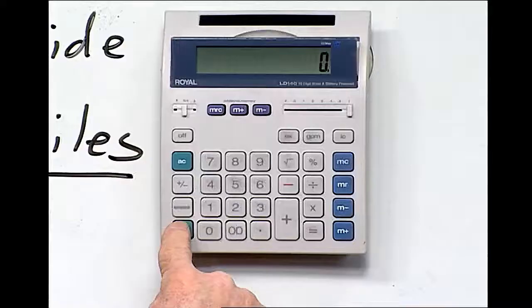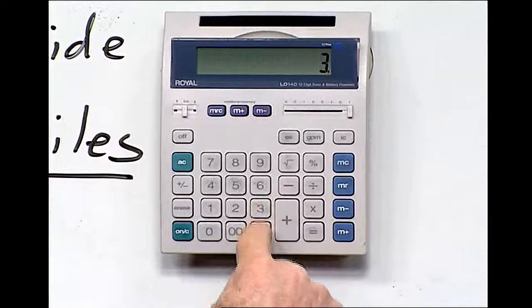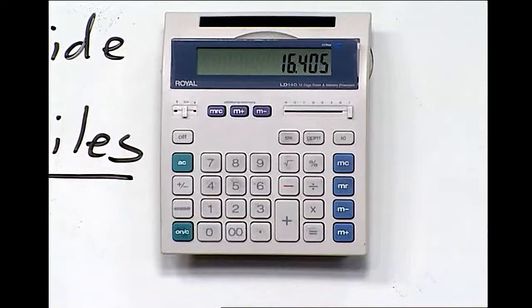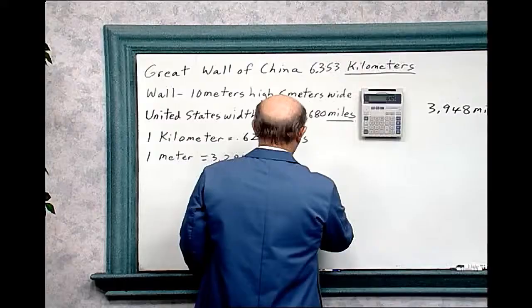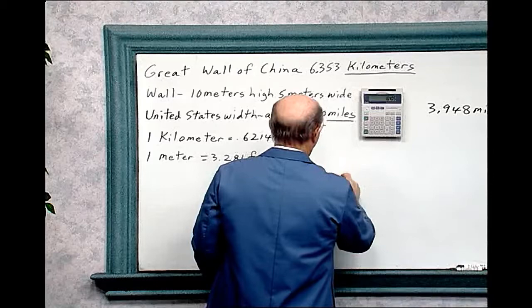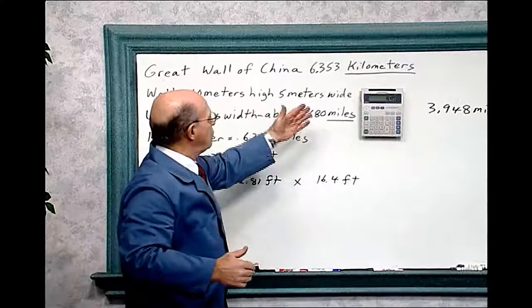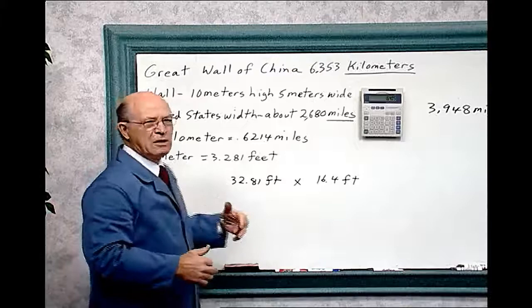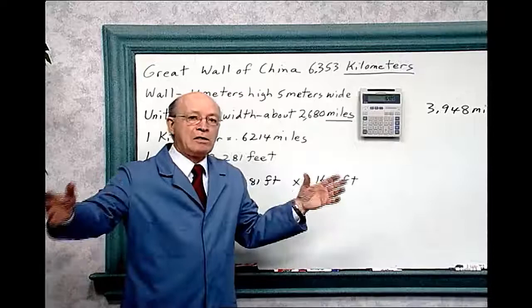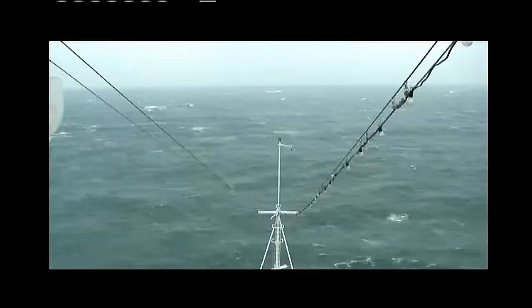And so 5 times 3.281 - let's clear the calculator - 3.281 times 5 equals, and so it would be 16.4 feet. So the width is about 16.4, about 16 and a half feet wide. So by being able to use the conversion, and I got this on the web - I went on the web and found out what the conversion of kilometer and meter was, and a lot of books have it also - you're able to give you a little better understanding of the length and the height and the width of that Great Wall in China.